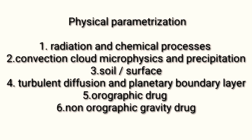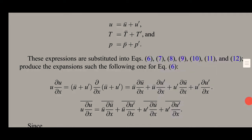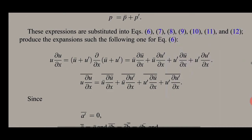Since we cannot ignore the effect and cannot maximize the grid resolution either, we must use Reynolds averaging for such components. For example, the u component of wind can be written as u-bar plus u-prime, where u-bar is the mean or average value — the resolvable component — and u-prime is the unresolvable component. This type of decomposition is applied to all components: wind, temperature, and pressure.